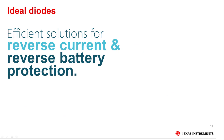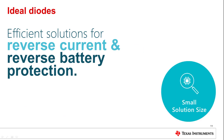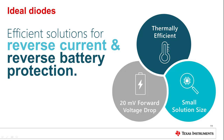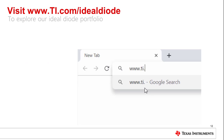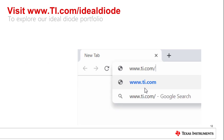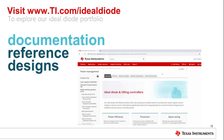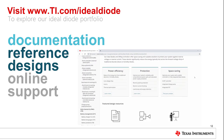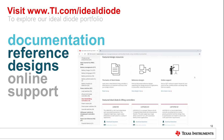TI's ideal diode devices are smaller, more thermally efficient solutions for reverse current and reverse battery protection with nominal 20 millivolt forward voltage drops. Visit ti.com/idealdiode for documentation, reference designs, and online support for the LM74700Q1 and TI's other ideal diode devices that could be the solution to your design challenges.